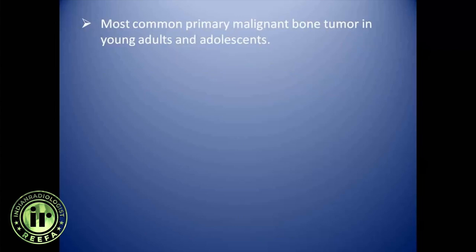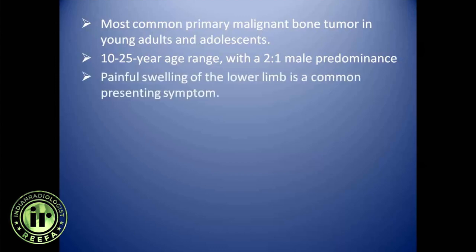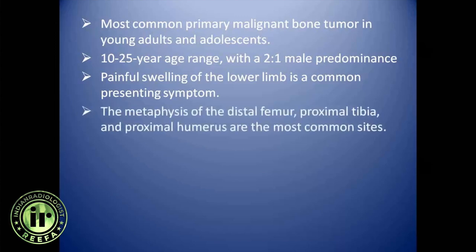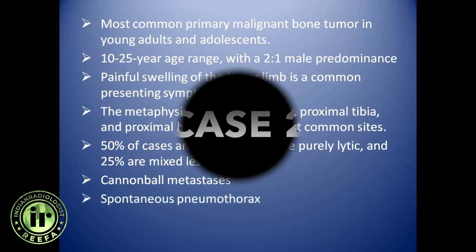Osteosarcomas are the most common primary malignant bone tumor in young adults and adolescents, commonly affecting the 10 to 25 years age range with a 2-to-1 male predominance. Painful swelling of the lower limb is a common presenting symptom. The metaphysis of the distal femur, proximal tibia, and proximal humerus are most common sites. 50% of cases are sclerotic, 25% purely lytic, and 25% mixed. Osteosarcoma can also present with cannonball metastases in the lungs with ossification in metastatic tissue, which can cause spontaneous pneumothorax.